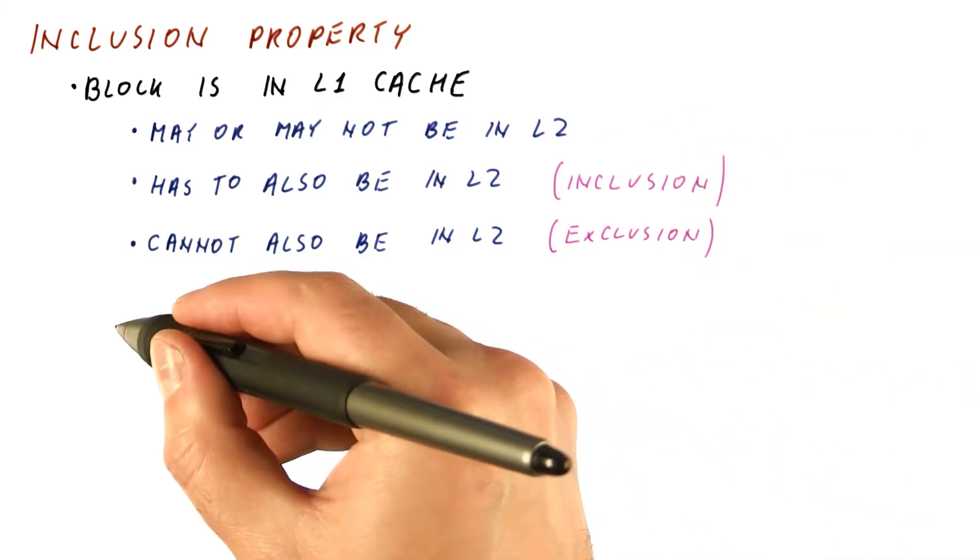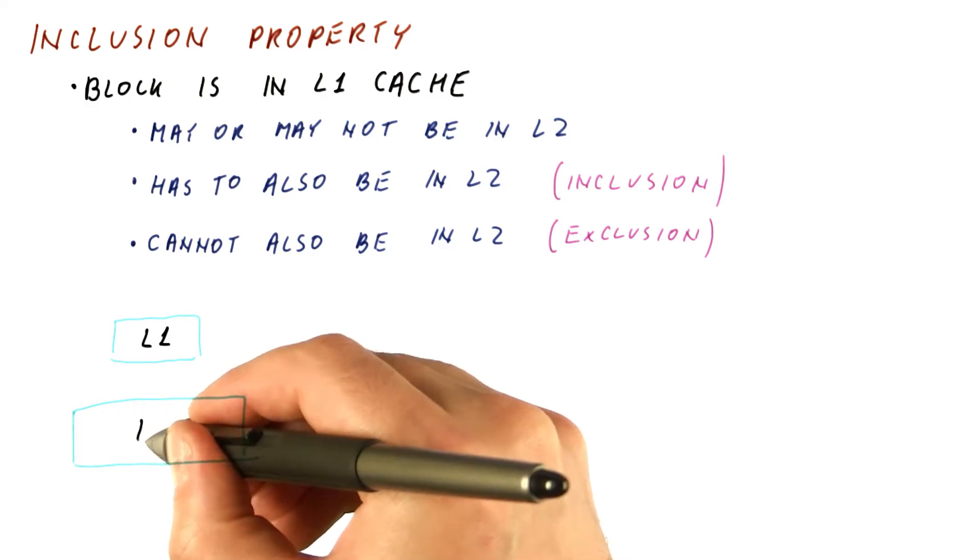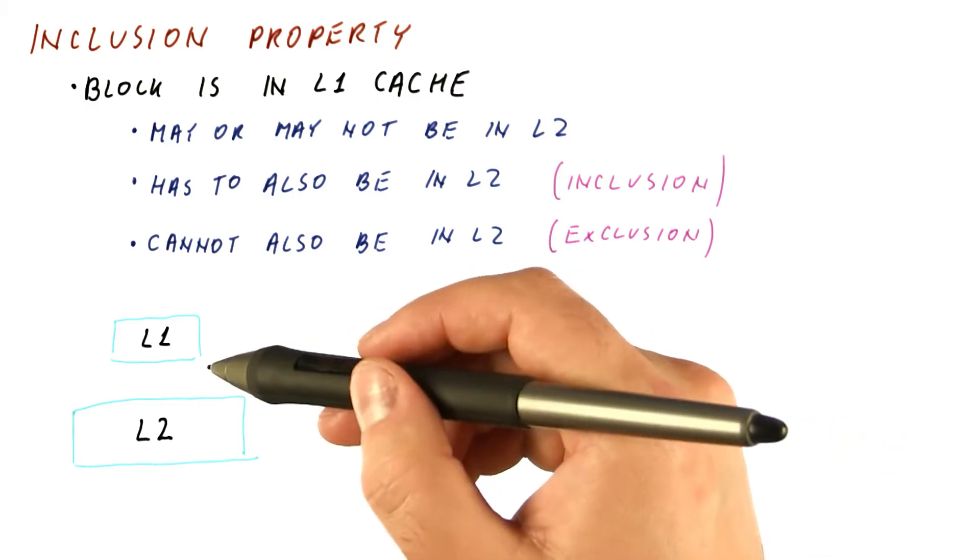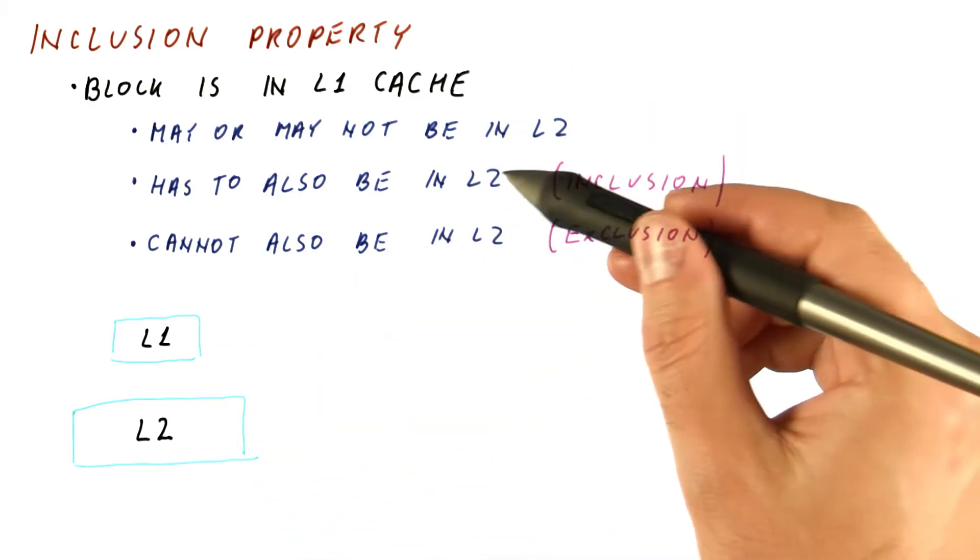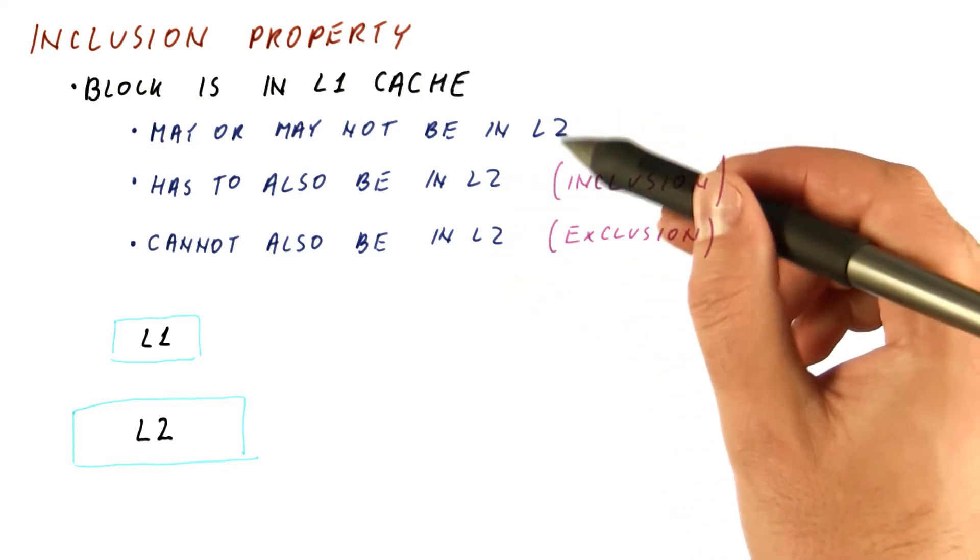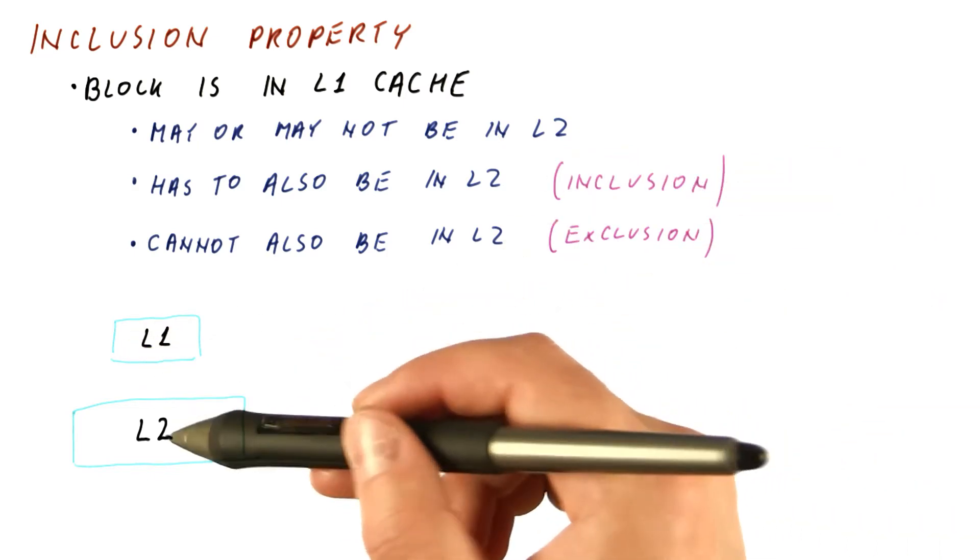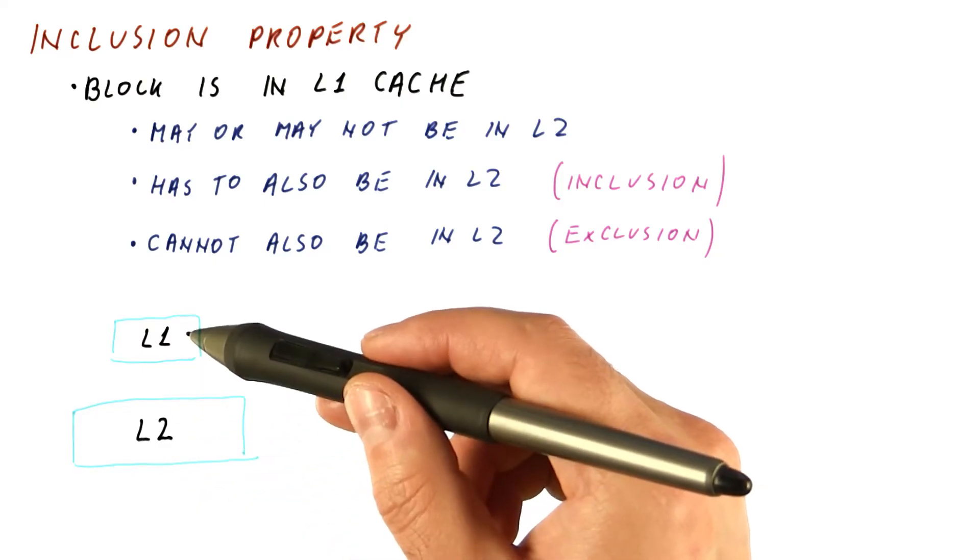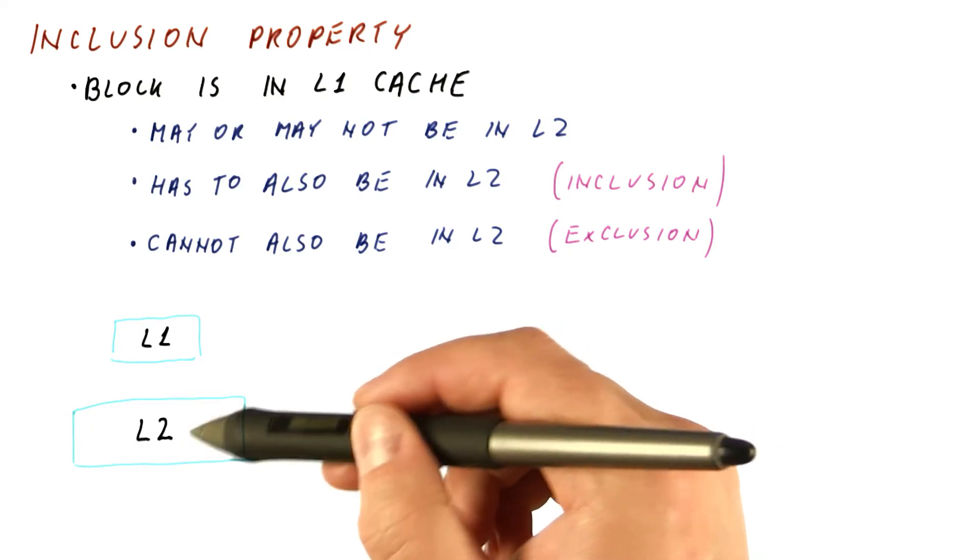So if we just have a normal cache hierarchy where processor accesses go to level one cache, and then the misses from that go to a larger level two cache, the question is what will we get? And the answer is, unless we explicitly try to enforce inclusion or exclusion, we will get this. Most of the stuff that is in L1 will also be found in L2, but there is no guarantee for that. So there could be blocks in L1 that have been replaced from L2.